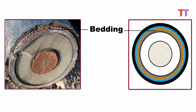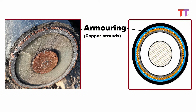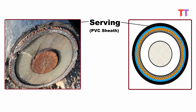The bedding also acts as a shock absorber. Over the bedding, there is a layer of armoring done using copper strands. Armoring is provided to protect the cable from mechanical injury during handling and laying of the cable. Due to armoring, the cable can withstand higher stresses and can be buried directly underground. The armoring is usually connected to earth. Finally, there is the outermost PVC insulation sheath layer.